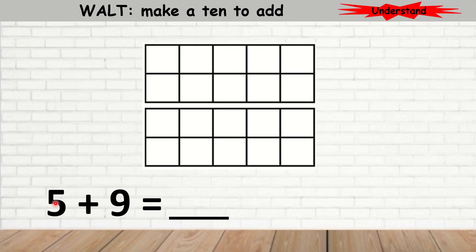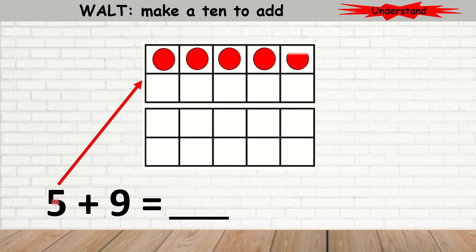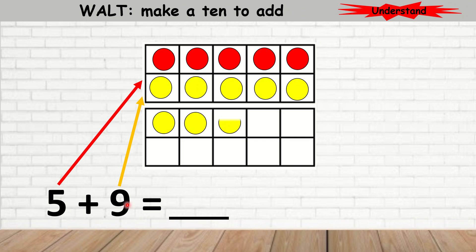Here's another example. I have 5: 1, 2, 3, 4, 5. Now I'm going to add 9 more. 1, 2, 3, 4, 5, 6, 7, 8, 9. I learned from my mistake.